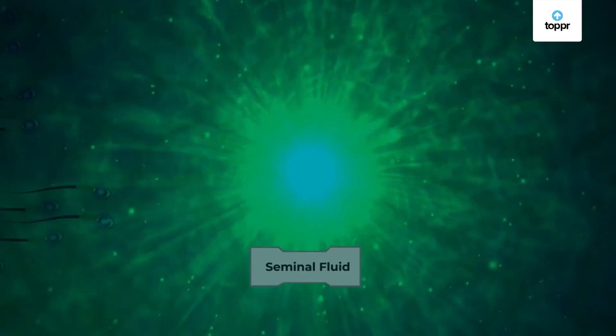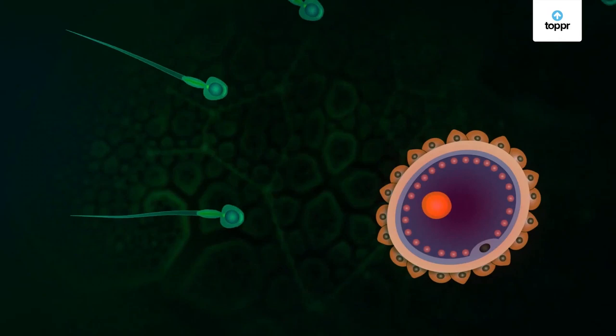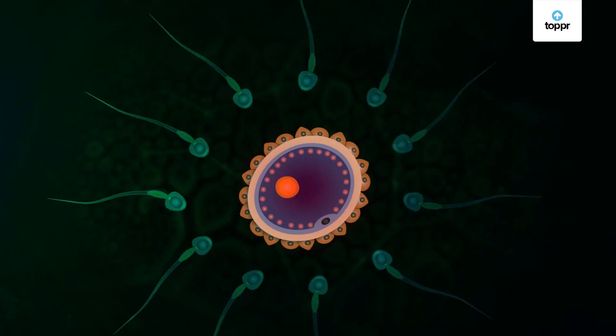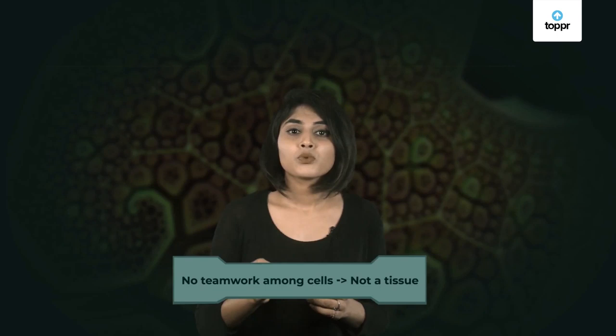Question number two: this is the seminal fluid secreted by the male sexual organ. As you can see, it has a lot of tiny tadpole-like things — these are sperm cells. The function of a sperm cell is to fertilize an egg. So is seminal fluid a tissue? Actually, no. In blood, all cells work together to transport materials in the body. But in seminal fluid, every sperm cell individually works to fertilize the egg — only one sperm can fertilize one egg, so it's a competition among sperm cells rather than teamwork. Since tissue requires cells to work as a team, seminal fluid is not a tissue.